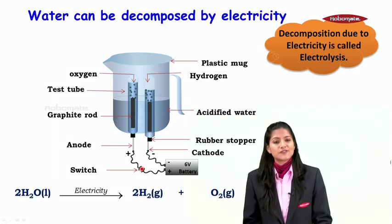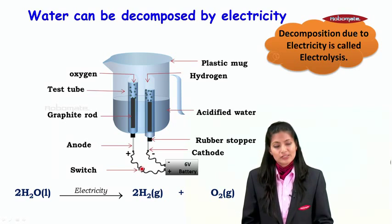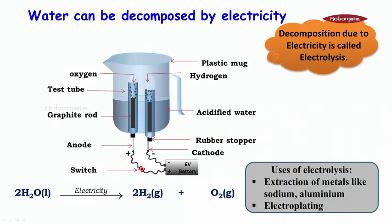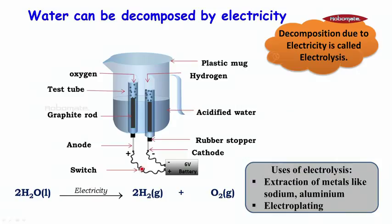Now what are the uses for this electrolysis process? Uses include extraction of metals like sodium or aluminum and also for the process of electroplating.